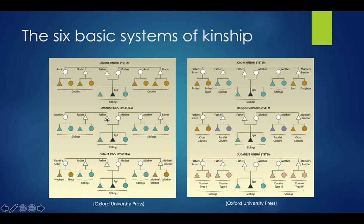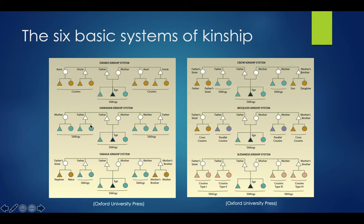With the Hawaiian kinship system, we again have ego, siblings, mother and father, but father and father's brother are both termed father. Mother and mother's sister are both termed mother; mother's brother is termed father; father's sister is termed mother. So instead of a lineal relationship with collateral terms for aunts and uncles, we take a whole generational approach — everybody in the parental generation is called father or mother, and everybody in ego's generation is called siblings.